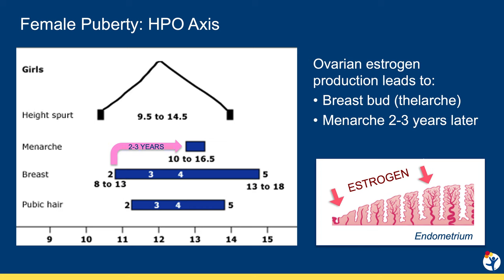For half of girls, menarche occurs when the endometrium becomes just unstable enough to shed or bleed. For the other half of girls, the first menarche is caused by ovulation.